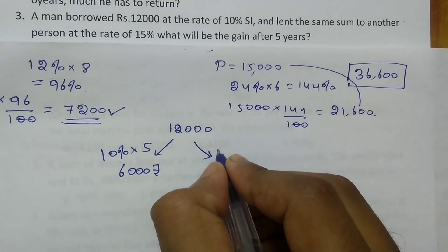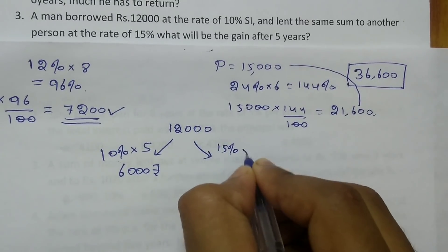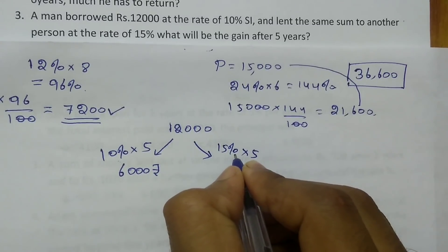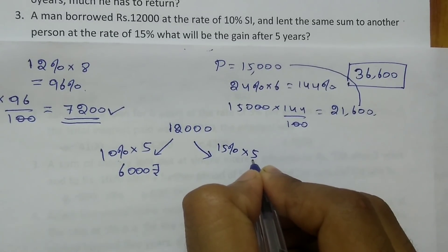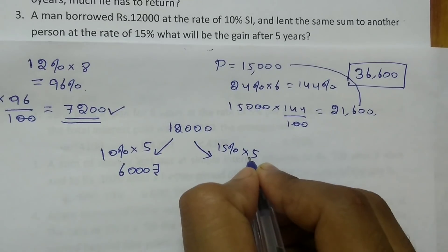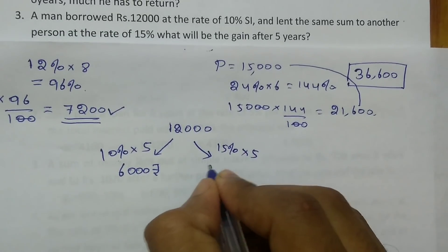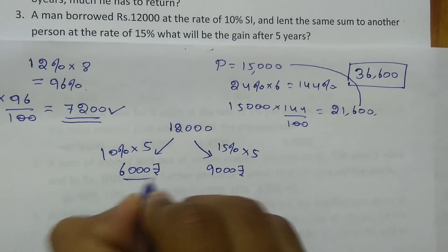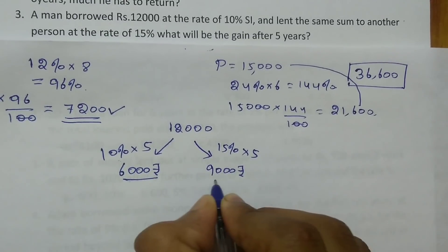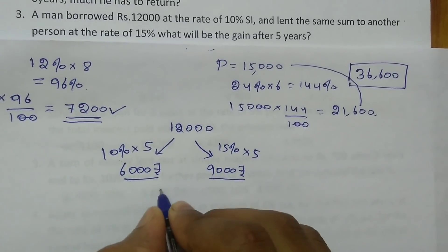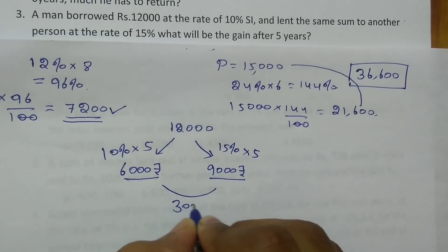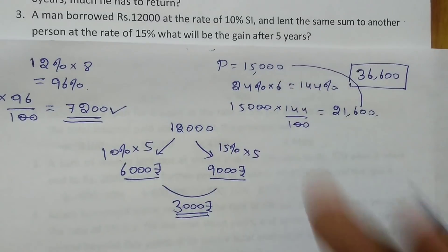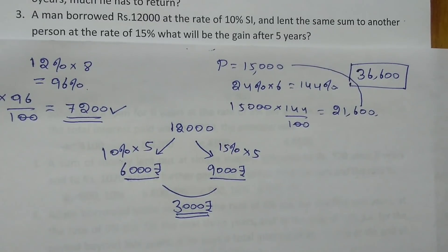You are asking the other man to pay 15% every year for 5 years. So 15% into 5 gives you 75%, and 75% of Rs.12000 is Rs.9000. At the end of 5 years you pay Rs.6000 to the bank and receive Rs.9000 from the man. So your profit is Rs.3000 — that is the total gain.